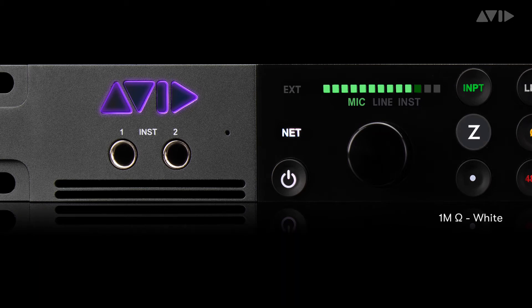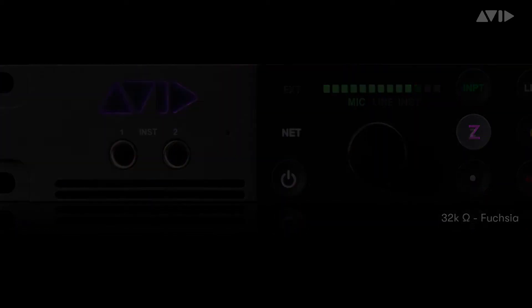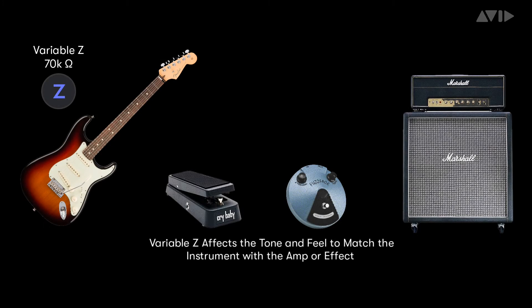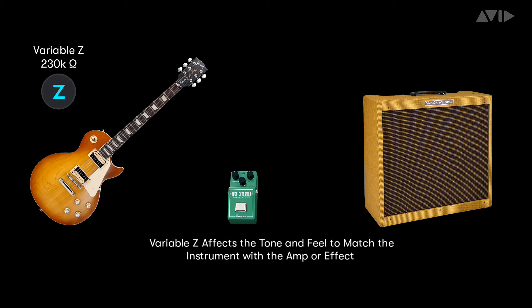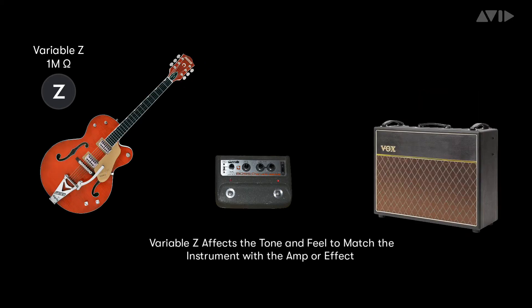There's 1 megaohm white, 230 kiloohms cyan, 90 kiloohms blue, 72 kiloohms violet, and 32 kiloohms fuchsia. These affect the tone and feel, matching the impedances of different guitar amps and effects hardware. This allows you to experiment and see which setting works best with your effects chain or gives you the best tonal complement to the material being recorded.